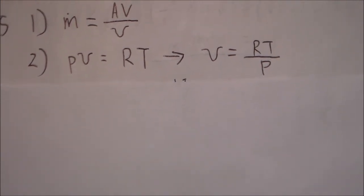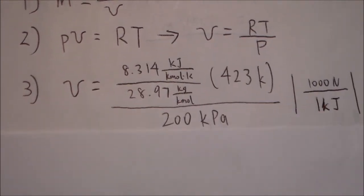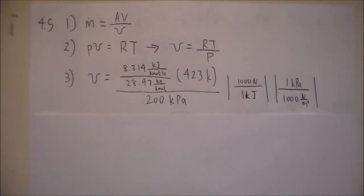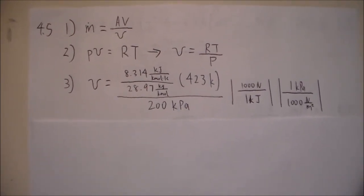Specific volume is equal to R times T divided by P. The question provided us with the temperature and pressure, so we can go ahead and calculate the specific volume.